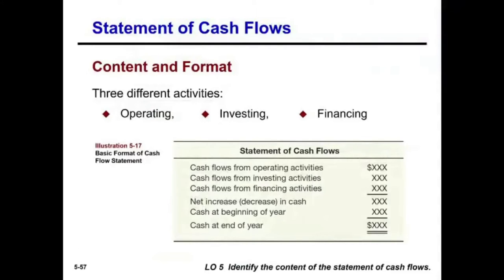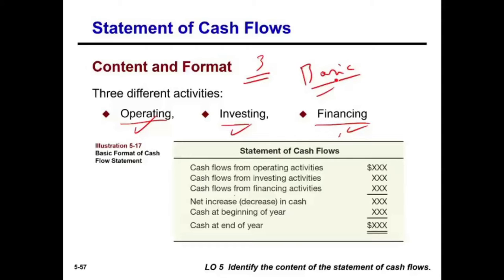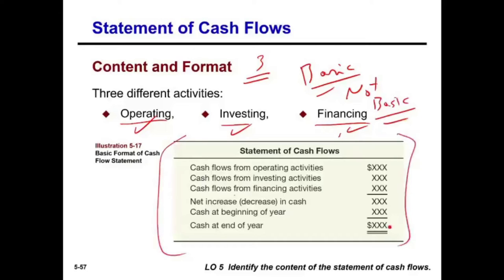Let's identify the three components of the cash flow statement. One is operating, one is investing, and one is financing. Each section can be bringing cash or consuming cash. For example: $10 from operating, negative $6 from investing, plus $2 from financing gives an increase of $6 in cash. Add that to beginning cash — say $1 — and ending cash should be $7. This is the skeleton of a cash flow statement.